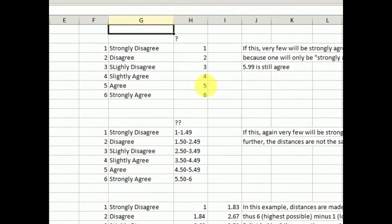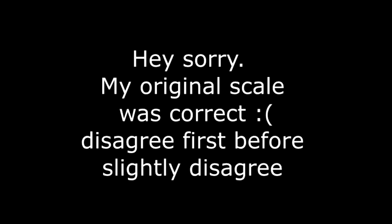Okay, so the first idea is to do a very straightforward: if you get 1, that's strongly agree; if you get 2, that's disagree; if you get 3, slightly disagree, and all that. This should be slightly disagree, and this is disagree.